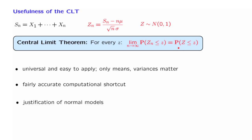Finally, at the philosophical level, the central limit theorem justifies why models involving normal random variables are very natural. Whenever you have a phenomenon or an object that's affected by multiple noise sources, and if these noise sources are independent, then the overall effect of those noise sources is going to be well modeled by a normal random variable, even if the distribution of each one of these noise sources is very different from being normal.